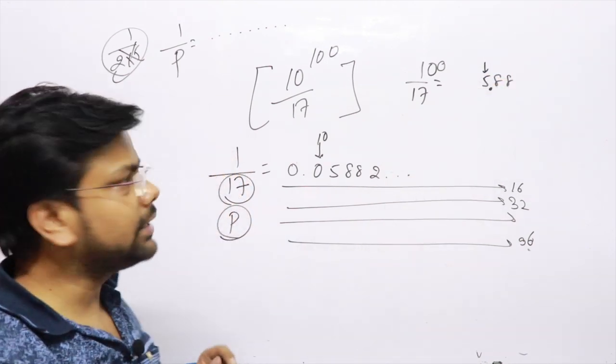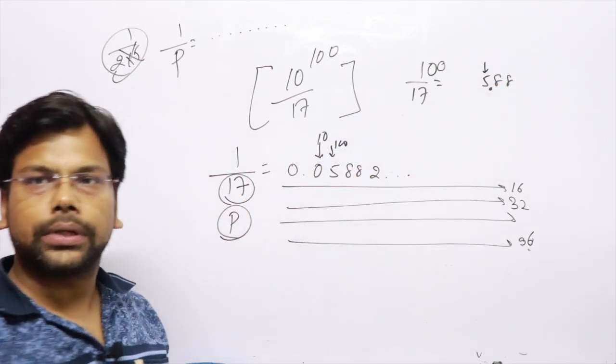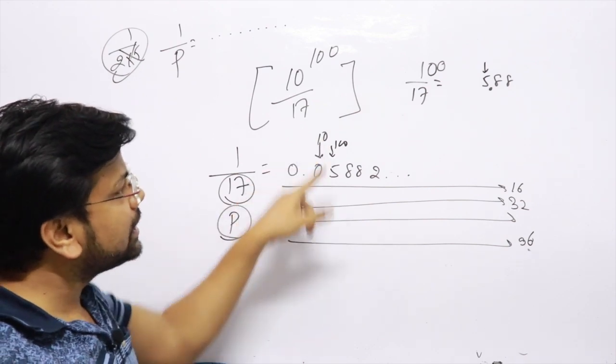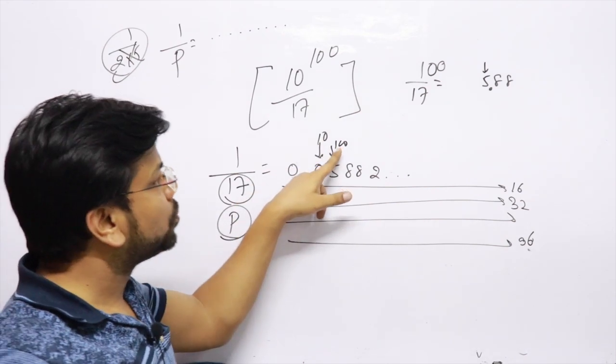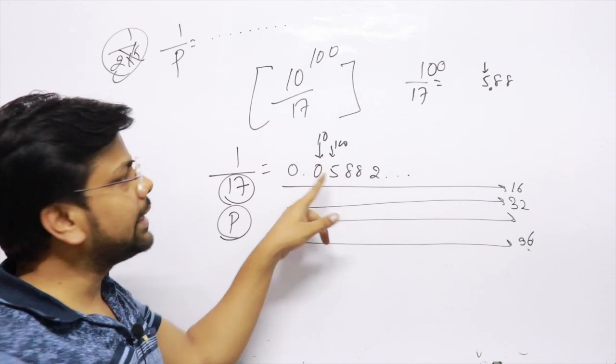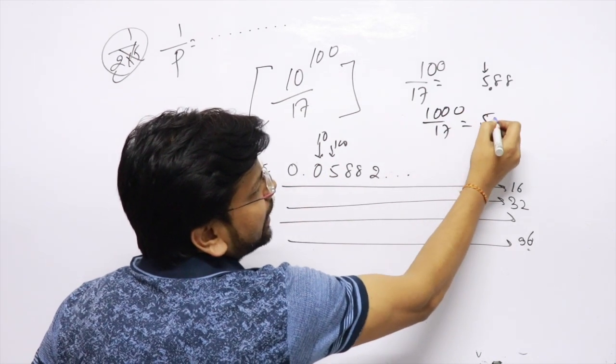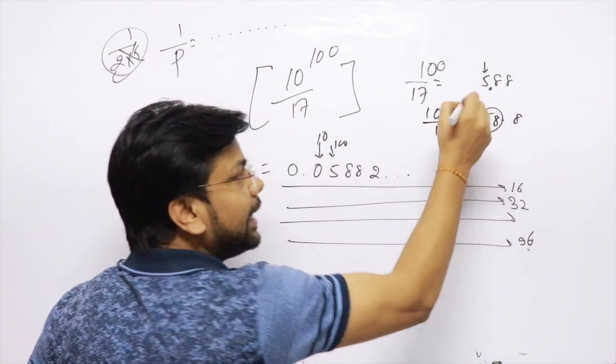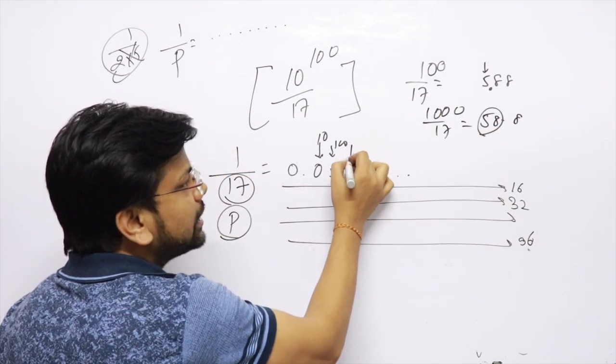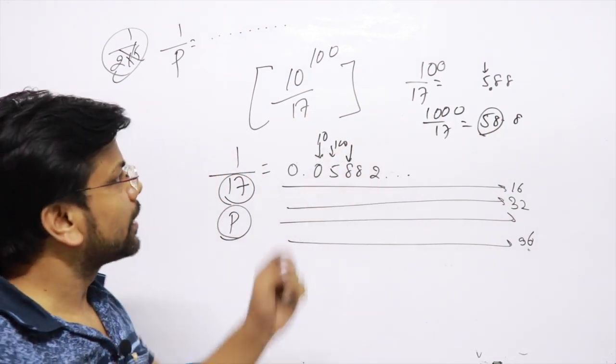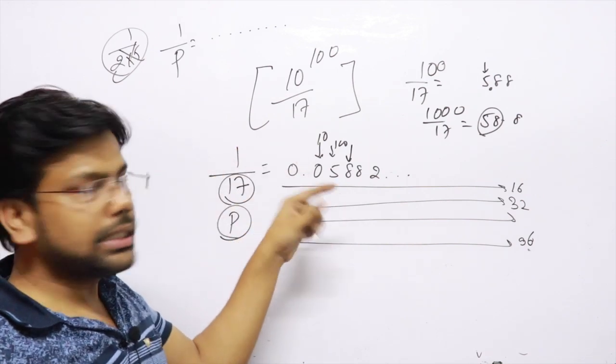If 1000 upon 17, then it will be 58.8, so 58 will be the integer. I need the third digit. For one zero the first digit, for two zeros the second digit, for three zeros the third digit. For 100 zeros I need the 100th place decimal.